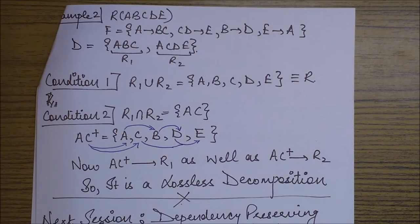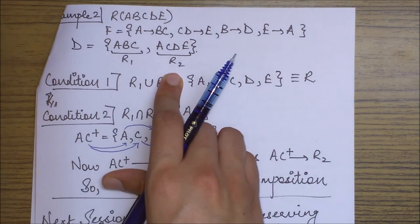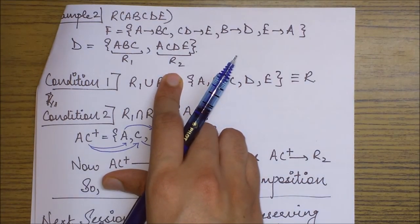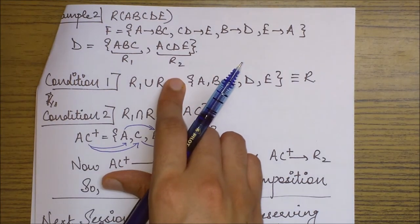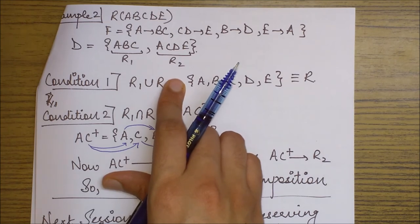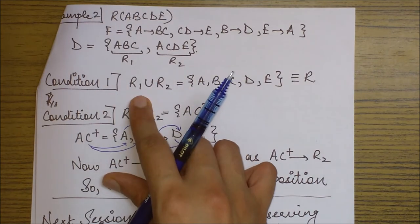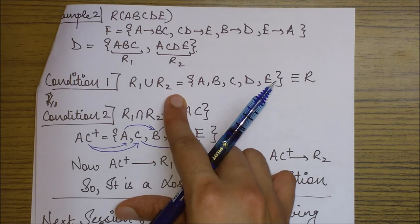So we have another relational schema R, ABCDE, and the functional dependency set given, and there are two decompositions, two decompositional relational subschemas, which is R1 and R2. Conditions are again same. We start by checking the first condition, which is R1 union R2 should be equals to R.